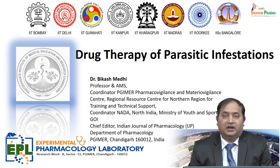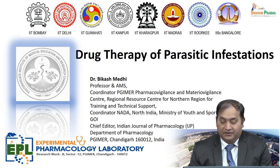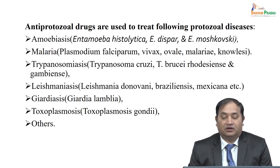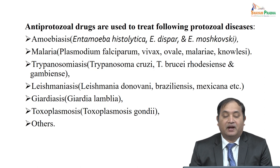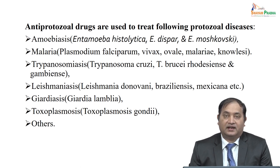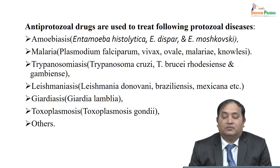As you know, we are in developing countries and parasitic infestations are very common compared to developed countries. What are the parasitic infestations? For example, amoebiasis is very common here. These are some examples of conditions where you can use anti-protozoal drugs in case of protozoal disease. Number one is amoebiasis, which results from infestation of Entamoeba histolytica, dispar, or monosky.